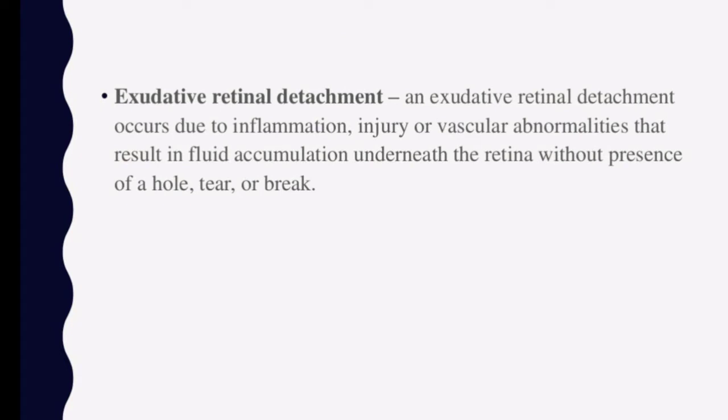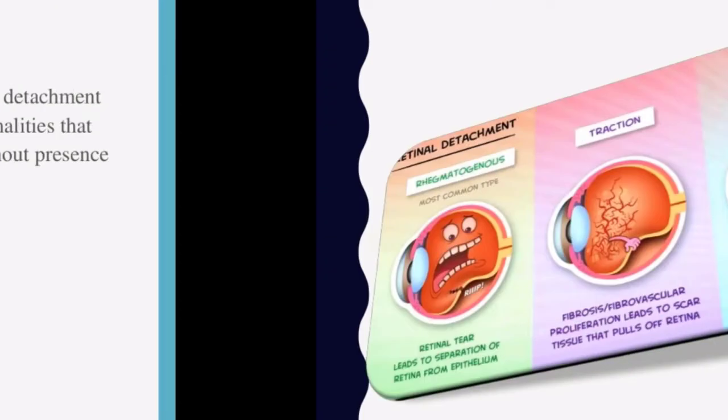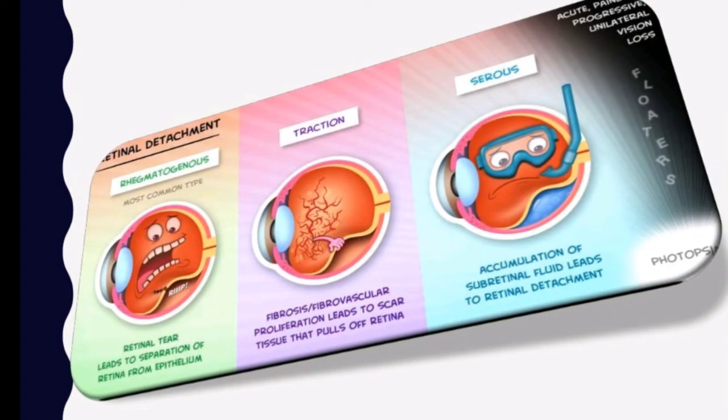Then comes exudative detachment. Exudative detachment is caused by inflammation, injury, or vascular abnormalities. Importantly, it is not a hole, tear, or break. So the key difference is: rhegmatogenous involves a retinal tear, tractional involves pulling, and in serous or exudative detachment there is fluid build-up without a break.